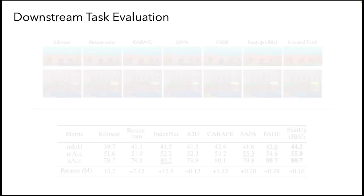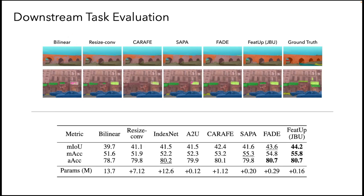FEEDUP's JBU variant can also directly substitute upsamplers in existing architectures such as the U-Net. We train the Segformer model end-to-end with FEEDUP and show improvements over existing feature upsamplers.